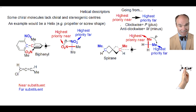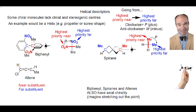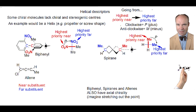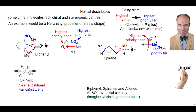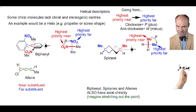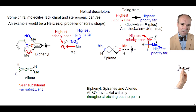Next, we will address allenes. Biphenyls, spiranes, and allenes all not only have a helix in their structure, but also an axial chirality. Imagine taking a point at a tetrahedral center found in stereogenic centers — although this specific chloroethane doesn't have a stereogenic center — and elongating it, stretching it out. Now you've created an axis.